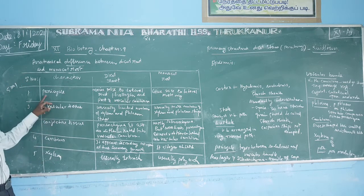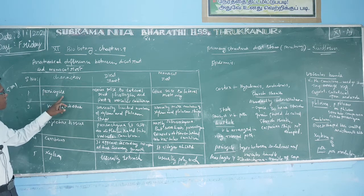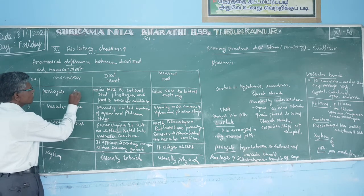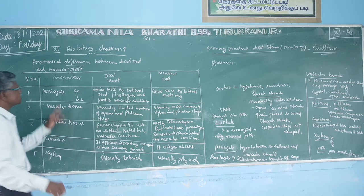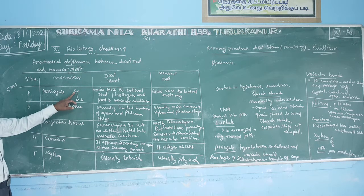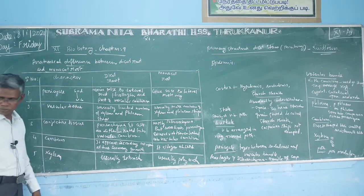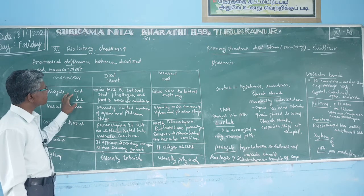The first character is pericycle. The pericycle is the layer that occurs between the endodermis and vascular bundle.